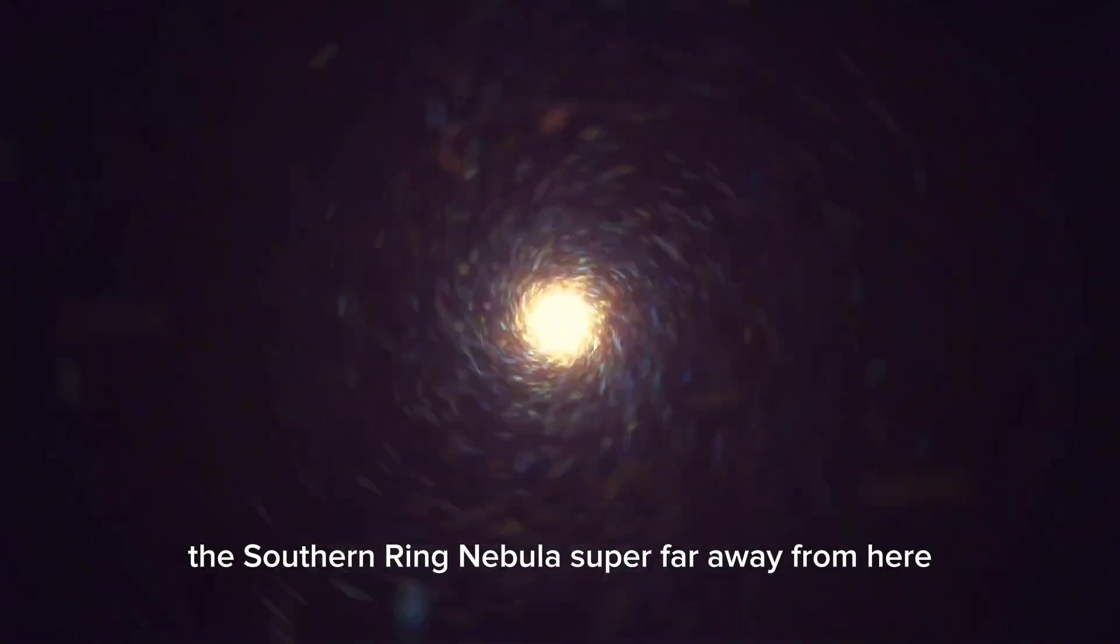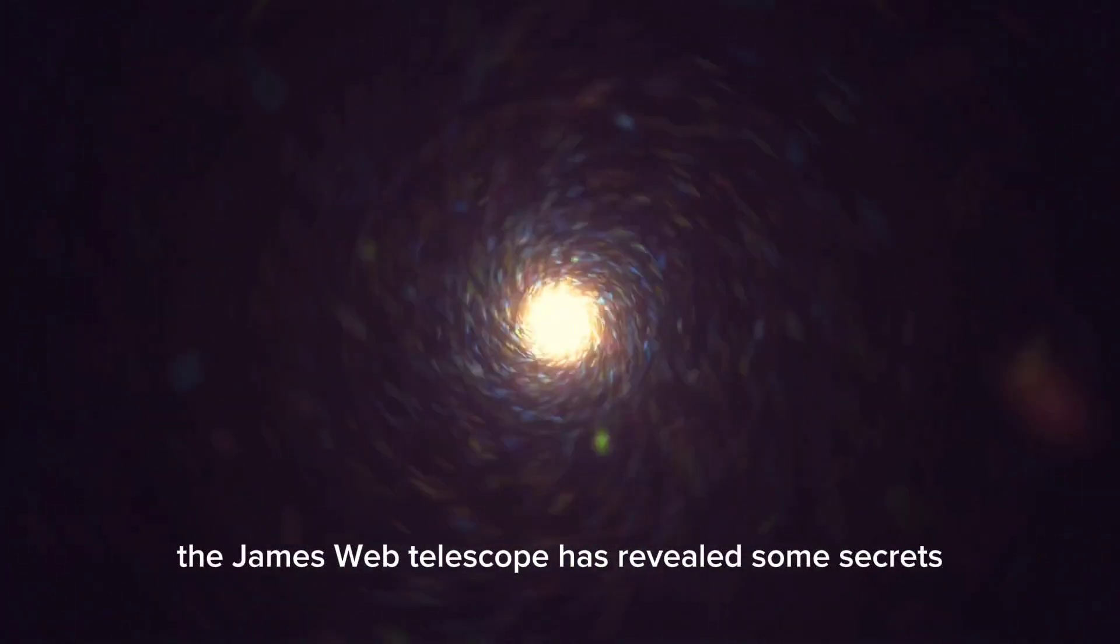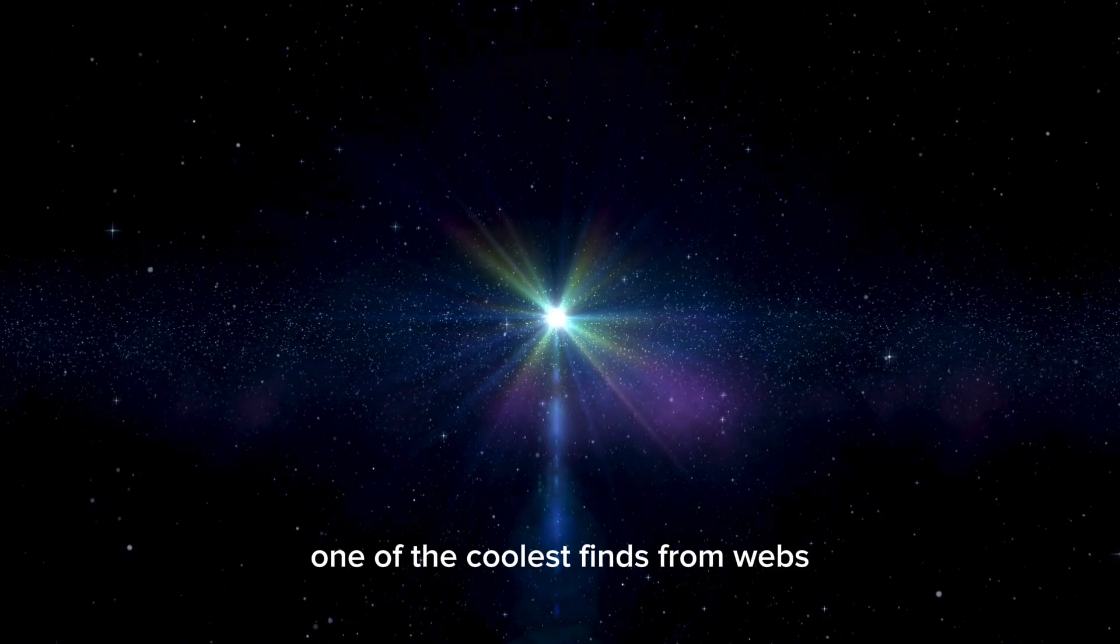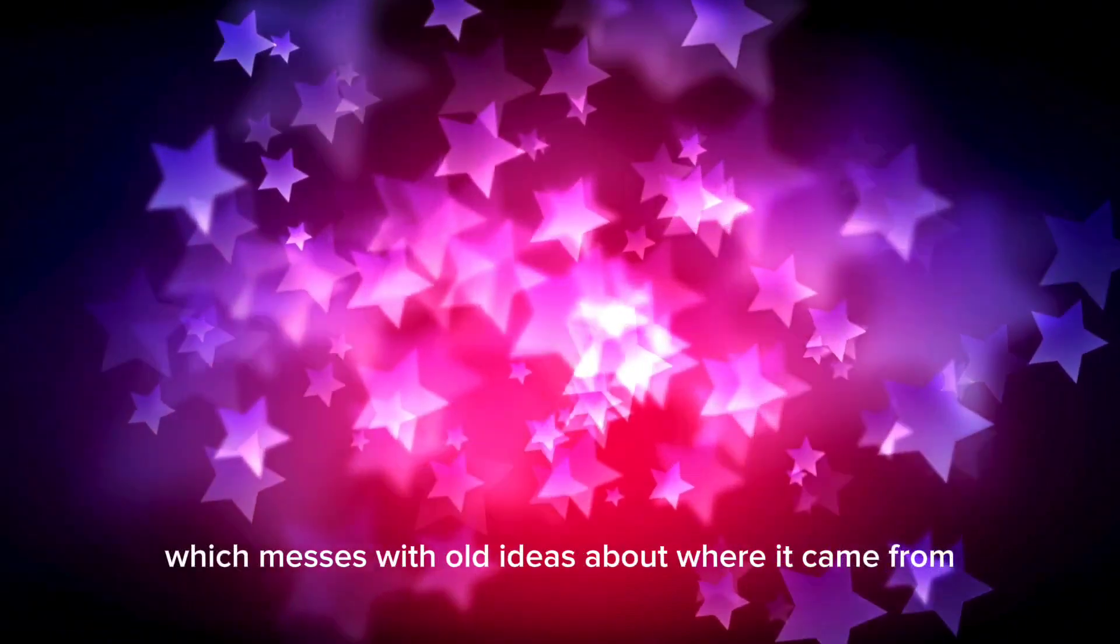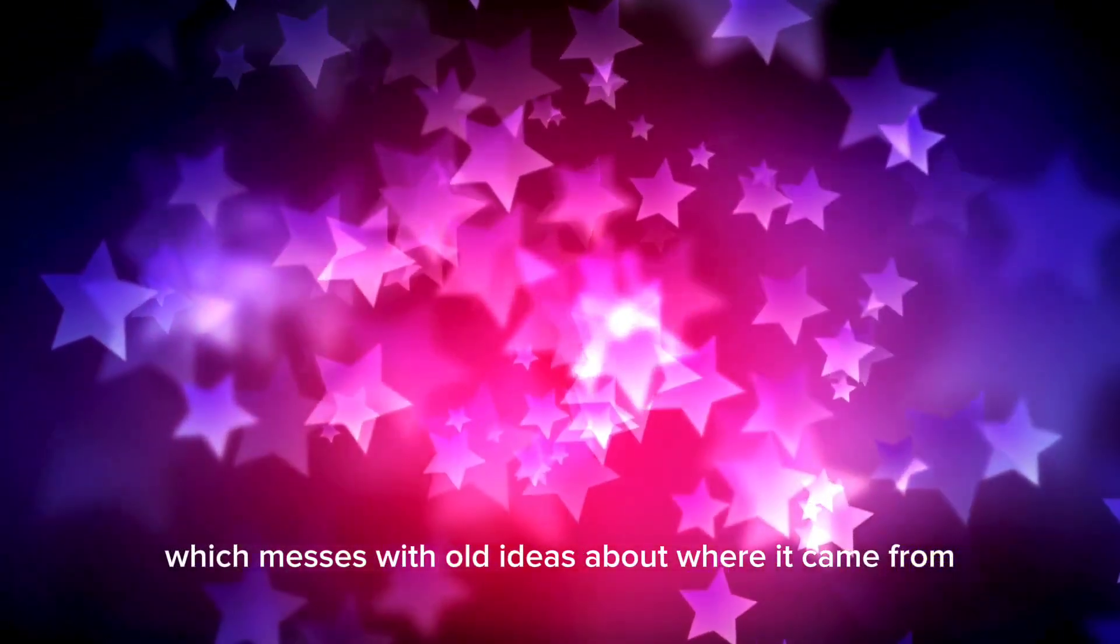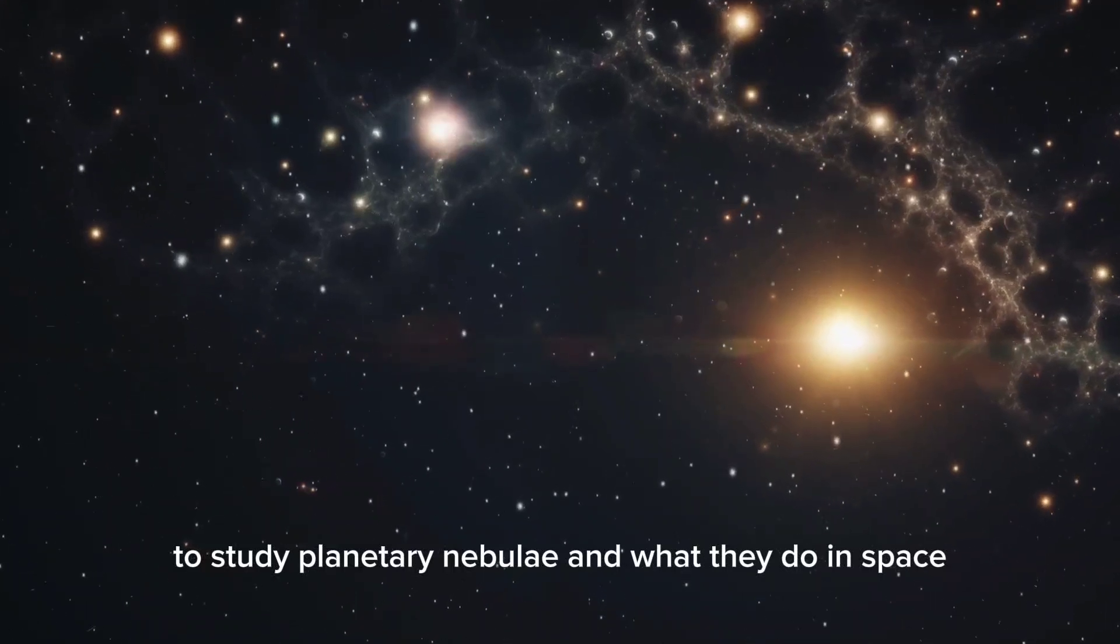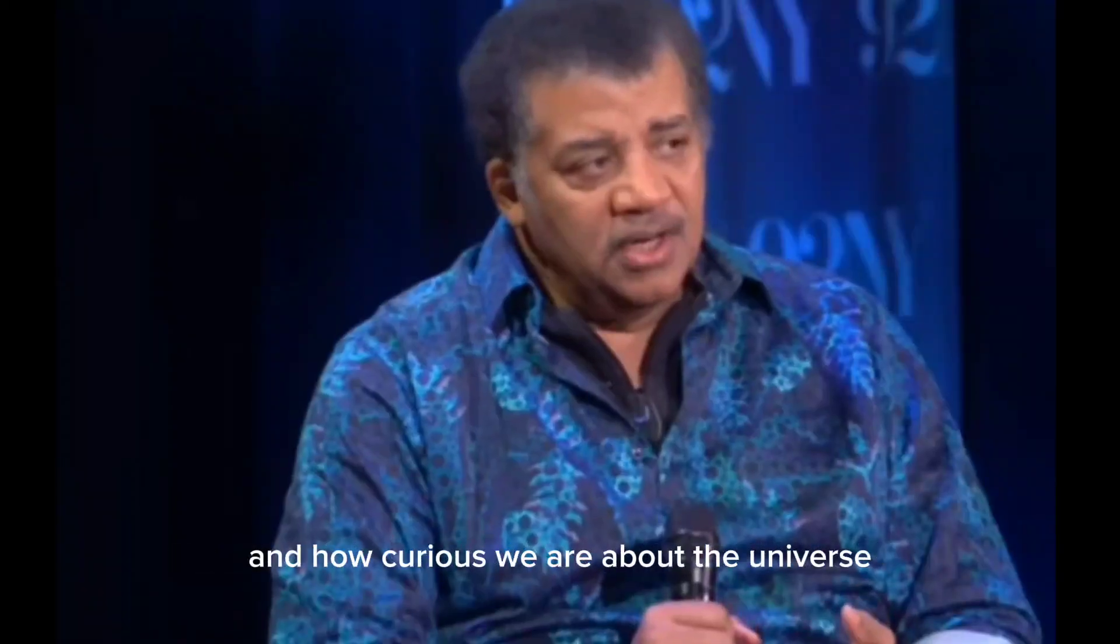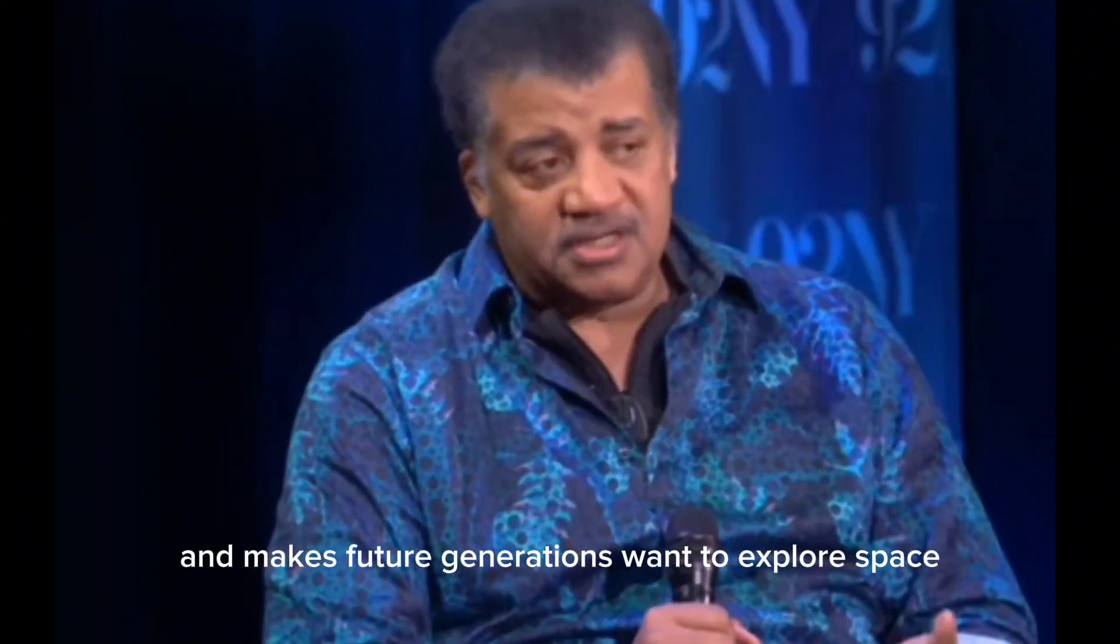The Southern Ring Nebula, super far away from here, always made experts interested, and now the James Webb Telescope has revealed some secrets about how it grows and what the stars do to shape it. One of the coolest finds from Webb's look at the Southern Ring Nebula is a third star in the middle, which messes with old ideas about where it came from. This has made people excited again to study planetary nebulas and what they do in space. Basically, the James Webb Telescope is proof of what we can do and how curious we are about the universe. With every new find, it pushes what we know and makes future generations want to explore space.